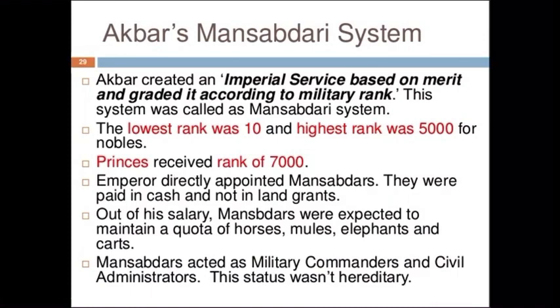Mansab denoted three things: first, it determined the status or rank of the Mansabdar in the official hierarchy. Second, it fixed the pay of the Mansabdars. Third, it fixed the specified number of Savars, or contingents with horses and equipment, that the Mansabdar had to maintain. The rank and salary of a Mansabdar were determined by a numerical value called Zat.